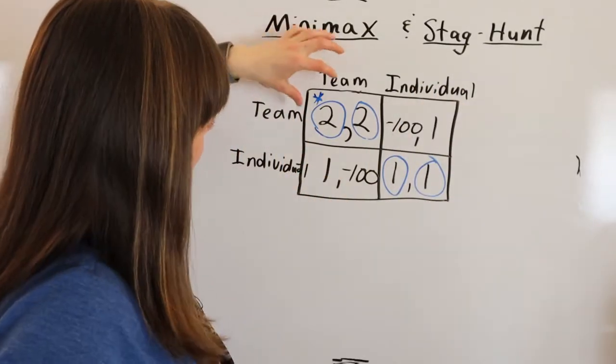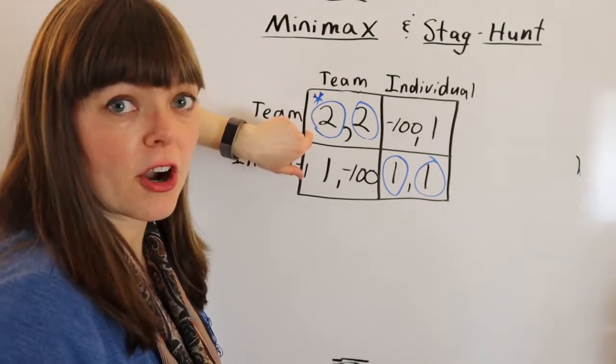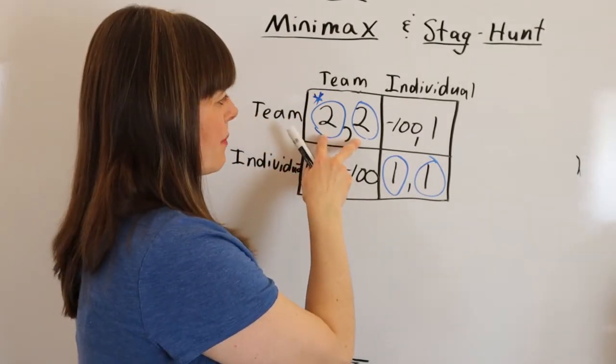But does this change how you interact in this game? We know that the best possible Nash equilibrium is up here. Both players can tell this is up here. However, if for whatever reason your partner went with the individual route trying to achieve this Nash equilibrium, you're in a really bad spot.